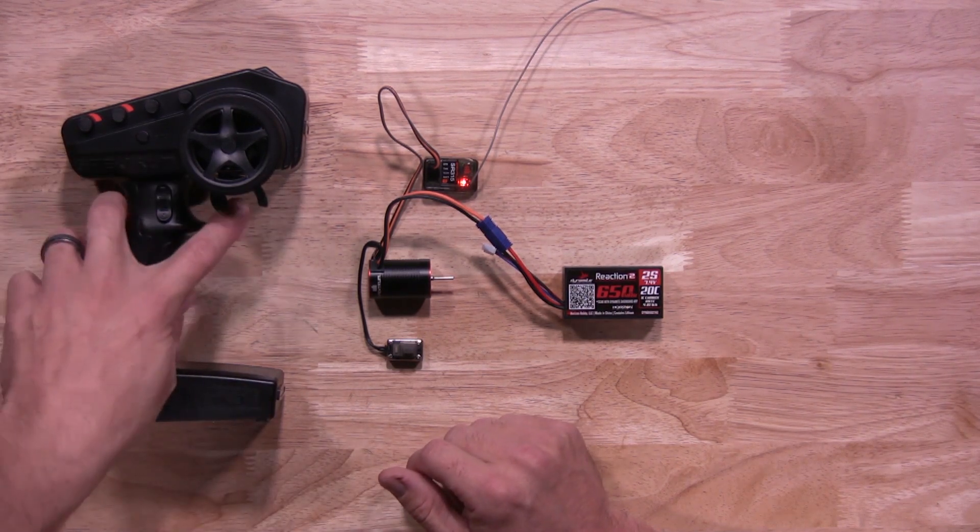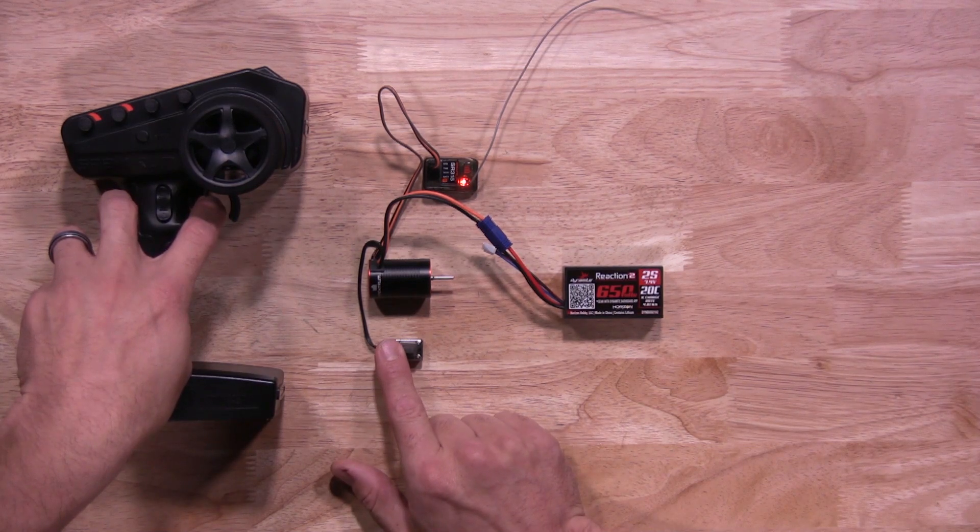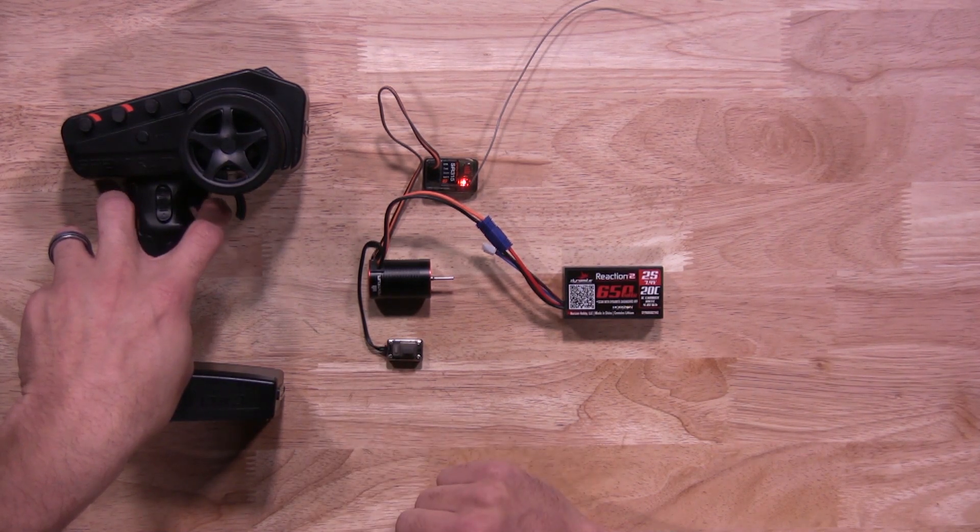Next setting is throttle. So you hold full throttle on the transmitter. Hit your button again. You'll hear two beeps to let you know it's been saved.